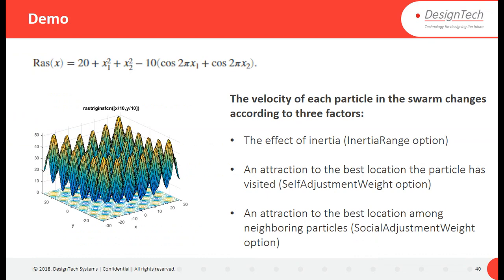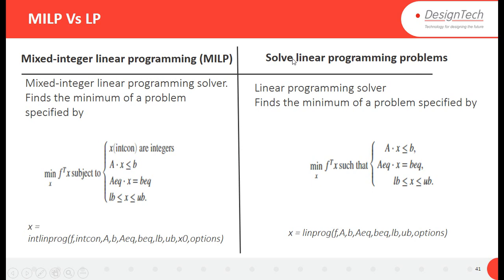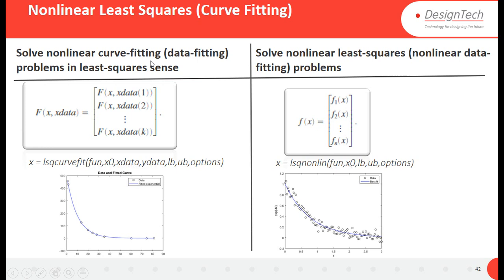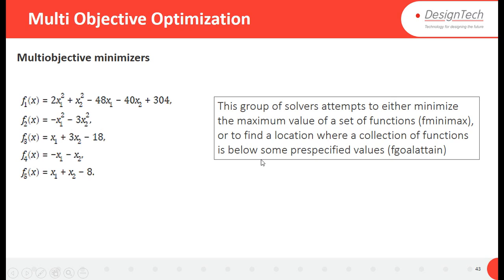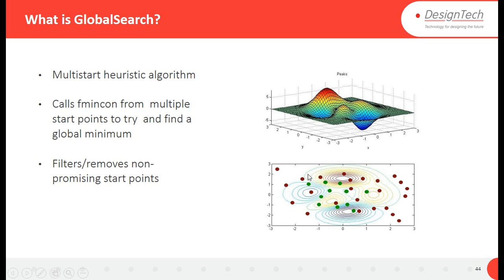You can also use mixed integer linear programming and solve linear programming problems in MATLAB — there are built-in functions for that. You can solve non-linear curve fitting, non-linear least squares, and both methods are available. Multi-objective minimizers are available as well — for a set of functions of a system, finding x1 and x2 values so that all functions are optimized. There is also global search, which is a multi-start algorithm that starts from multiple points to find the global minimum.